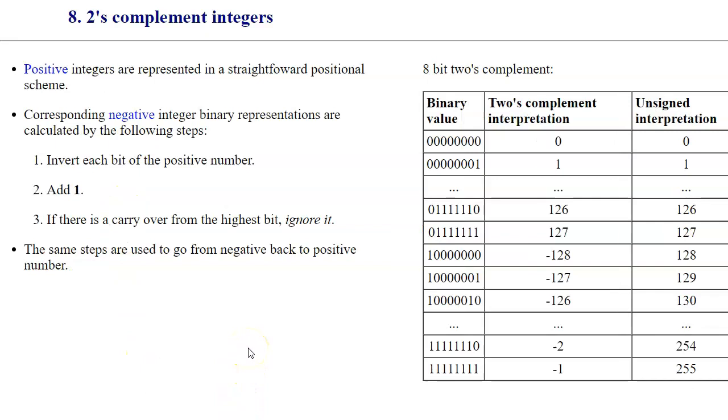The next possibility is two's complement integer. The idea is that positive integers are represented in this straightforward positional scheme, just like we had before. Pretty much all of these are positive numbers encoded normally. And then the corresponding negative integer is computed by inverting every single bit of the positive number. For instance, if this is a one, so we have all zeros and one at the rightmost or the lowest bit. We invert every bit, which would be all ones and then zero, and then we add one.